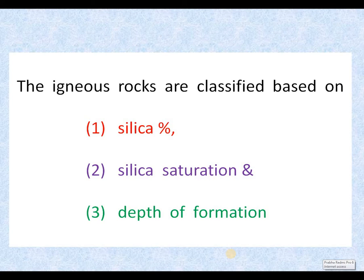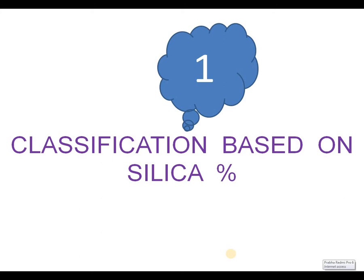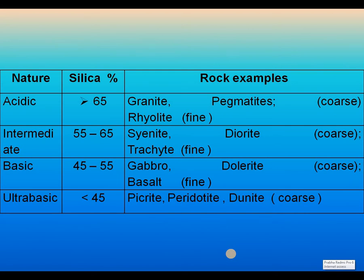Igneous Rocks are classified based on three parameters: one is silica percentage, another one is silica saturation, and the third one is depth of formation. Based on silica percentage, Igneous Rocks are considered as acidic, intermediate, basic, and ultrabasic Igneous Rocks.